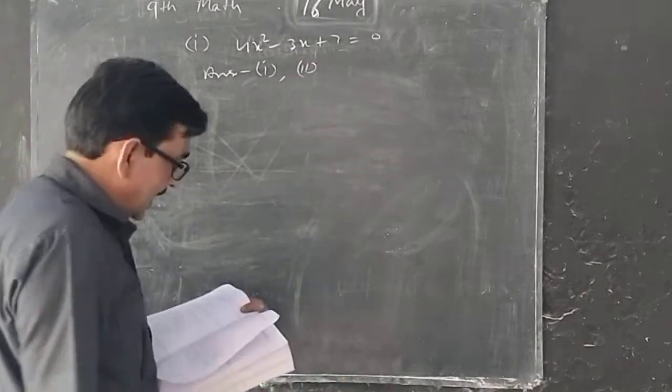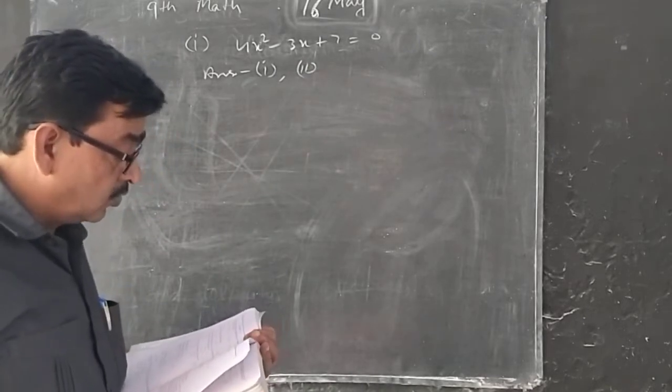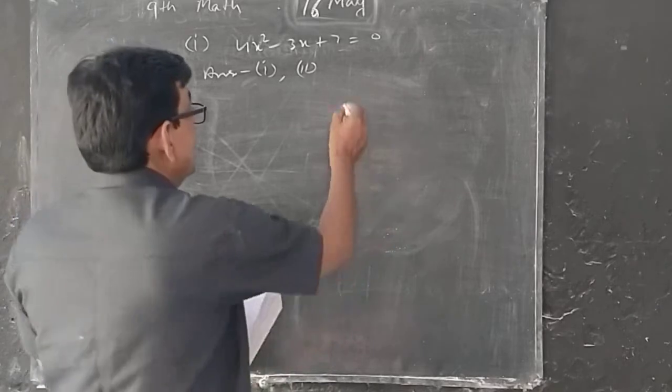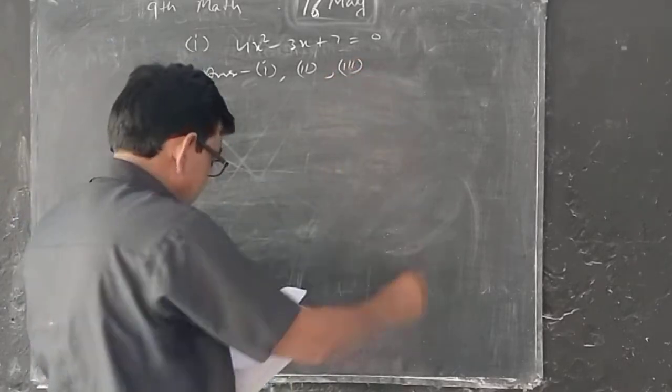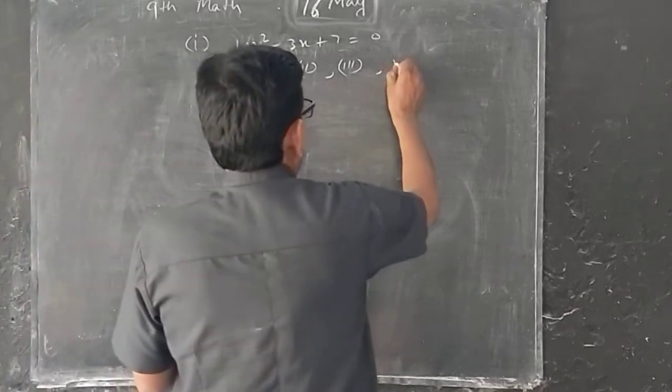This is one variable. This is square root t plus t square root 2, this is one t, this is y plus 2 divided by y, this is one variable.